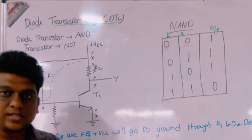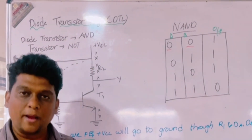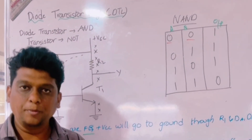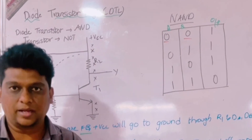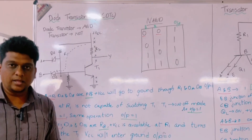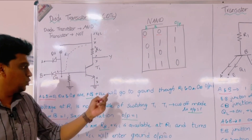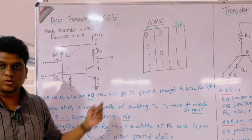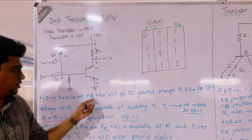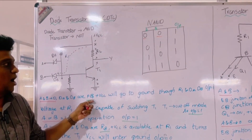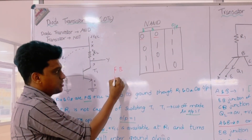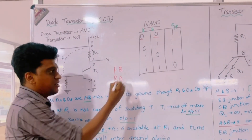First you should understand the term biasing. Biasing means applying an electronic supply to the semiconductor device to make it work. Biasing can be classified into forward bias and reverse bias.